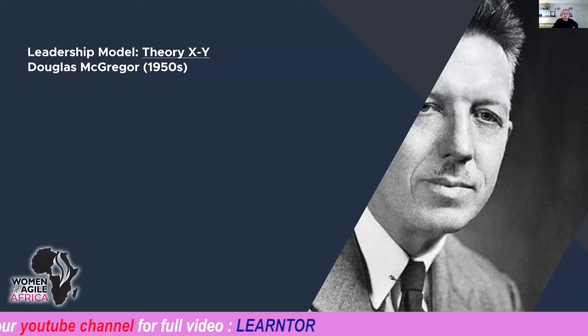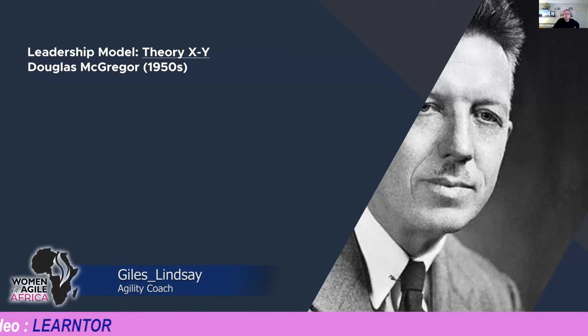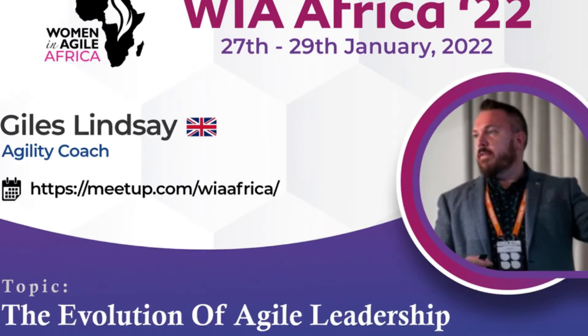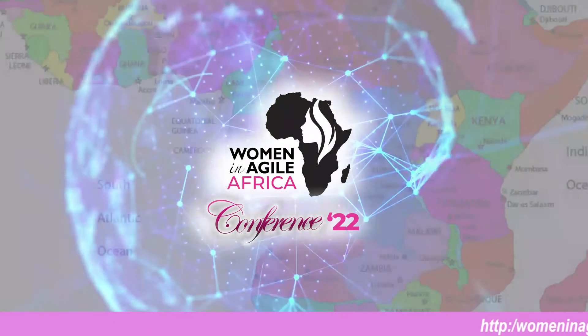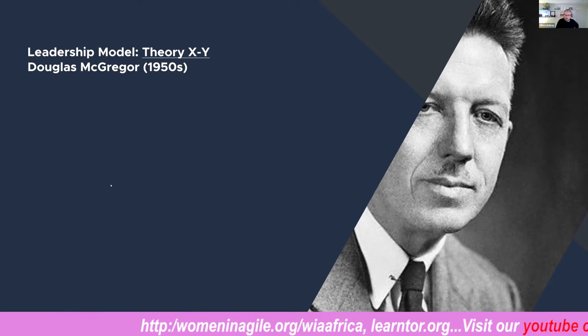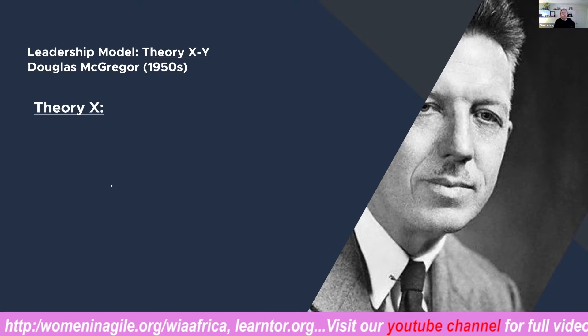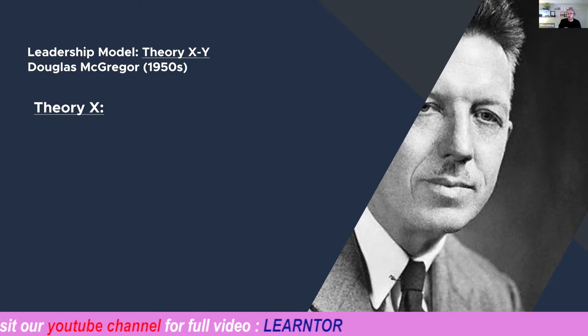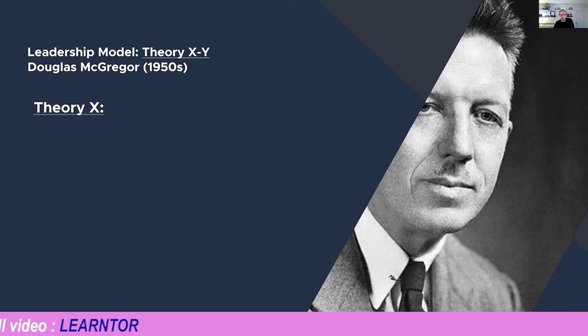Command and control managers tend toward Theory X and generally get poor results. Enlightened managers, much like our Agile leaders, use Theory Y, which produces better performance and results and allows people to grow and develop. To share the significant difference in these theories, I'm going to start first with Theory X and its negative approach before sharing Theory Y as the first positive model today.